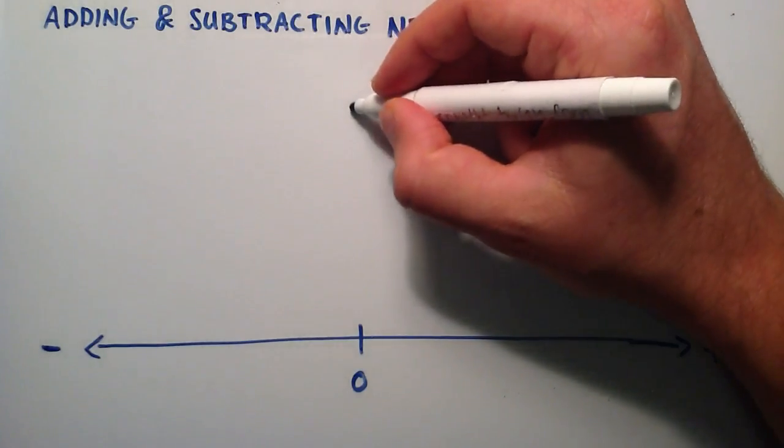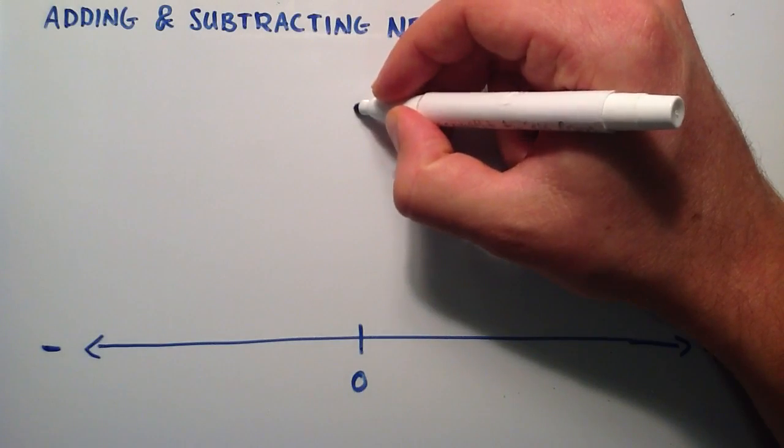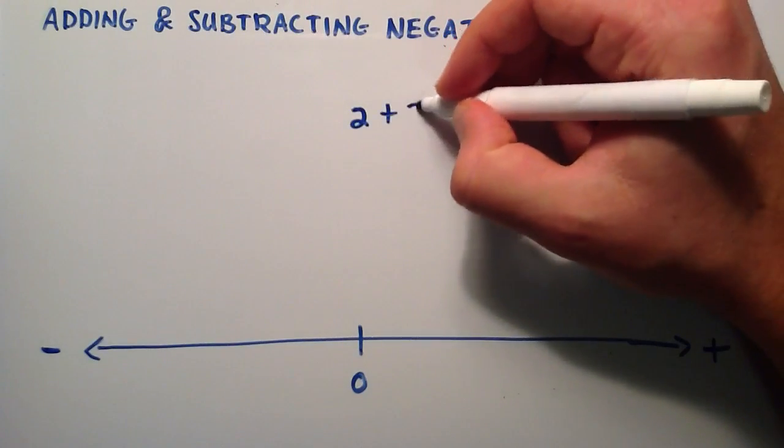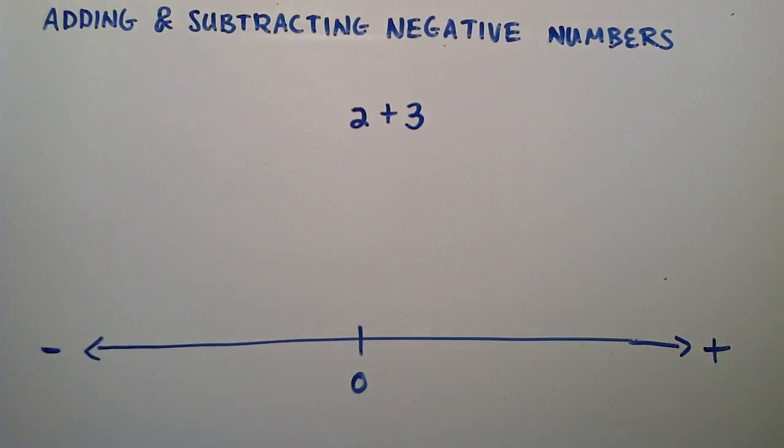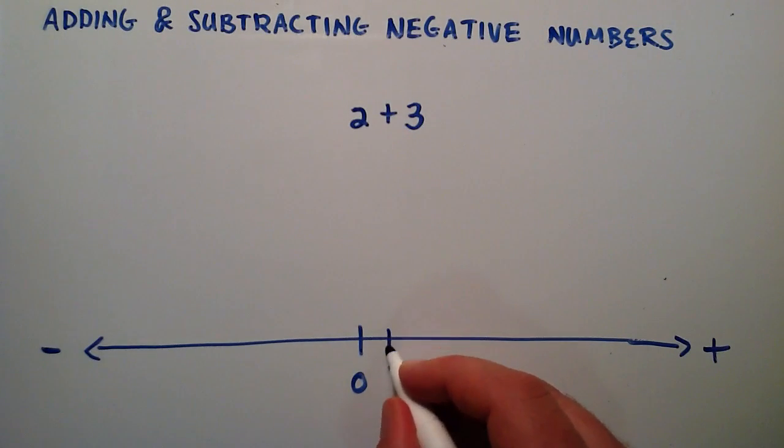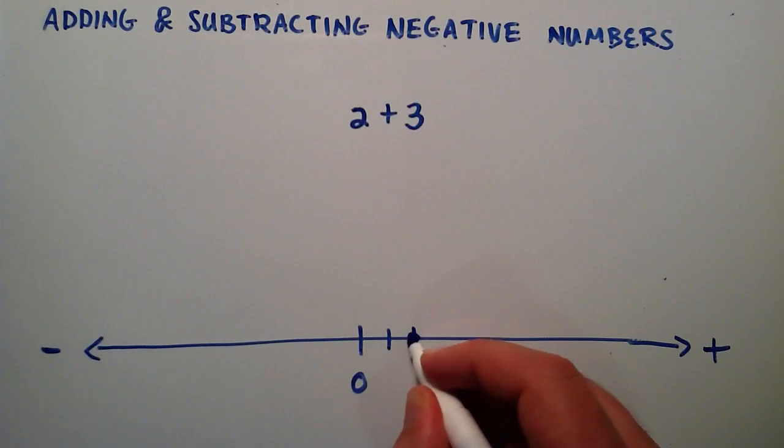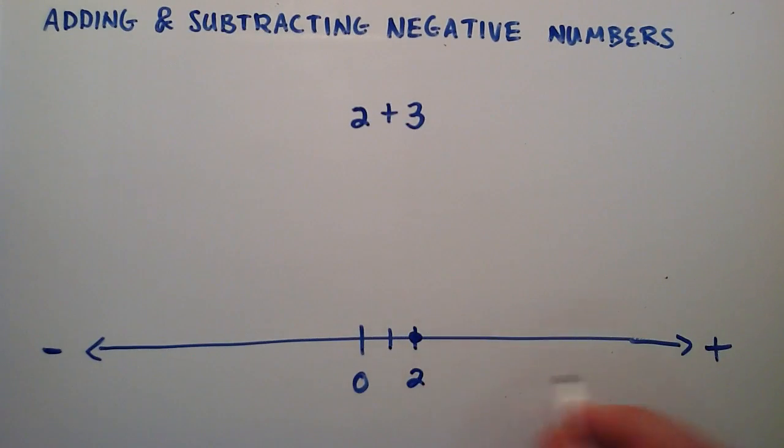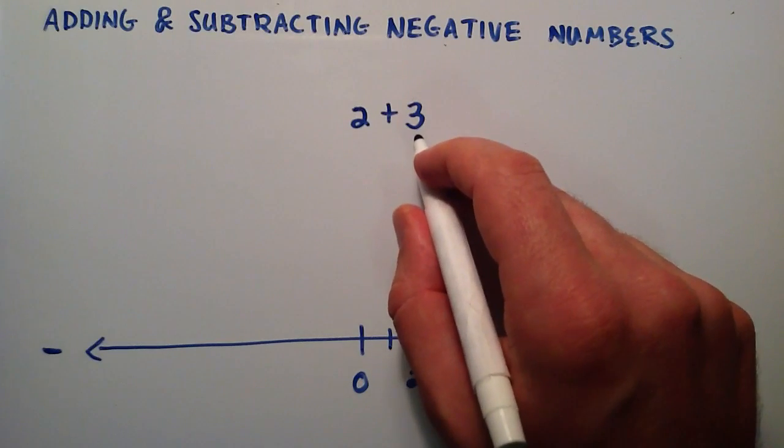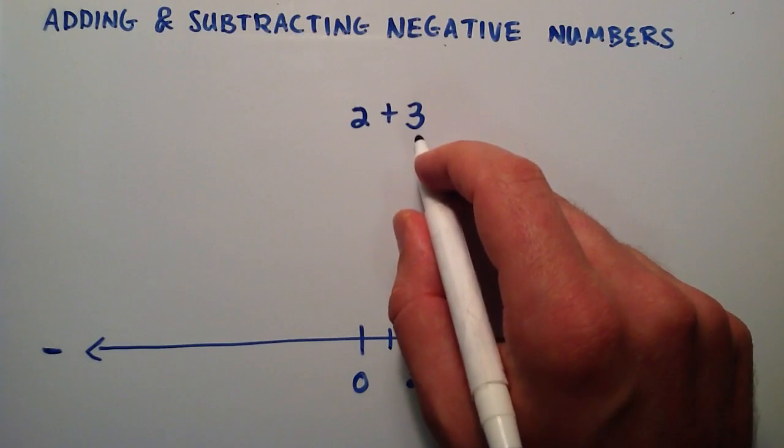let's start with adding a positive number. So let's just say that we have the number 2, and we're going to add the number 3. So we're adding a positive number. So we start at 0, go up to our first number, which is 1, 2. So this point represents the 2. It's 2 units to the right, or in the positive direction of the 0.